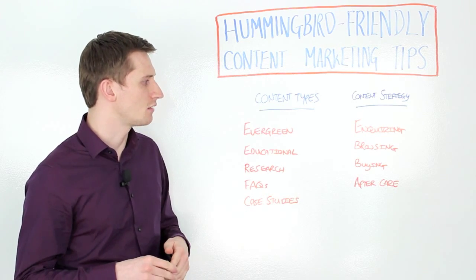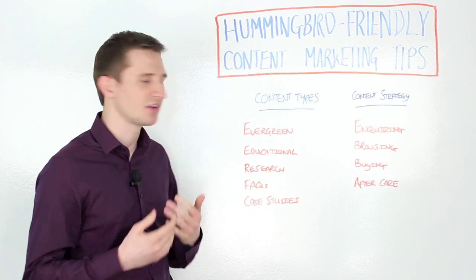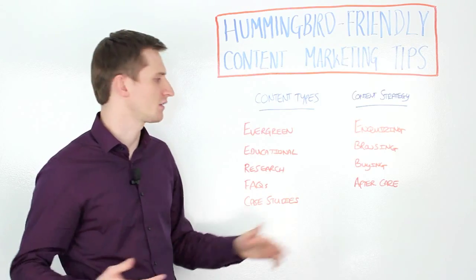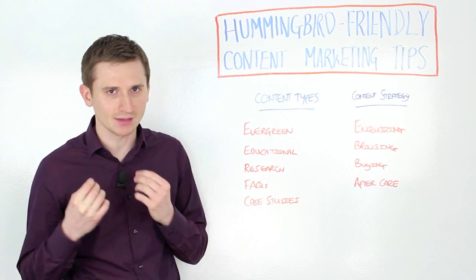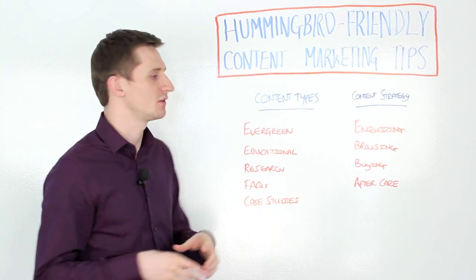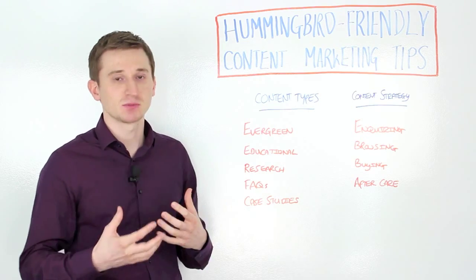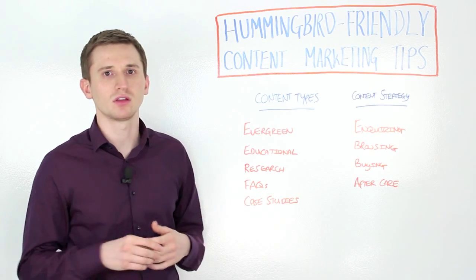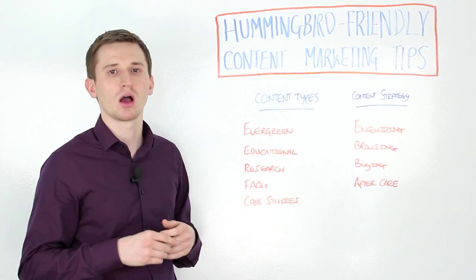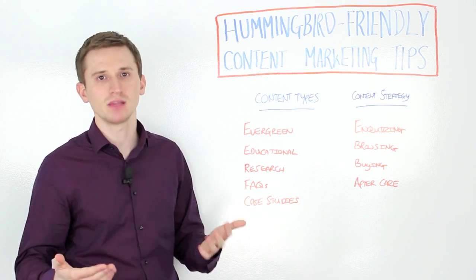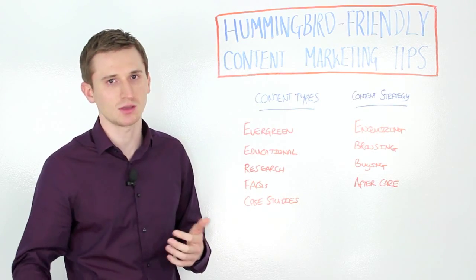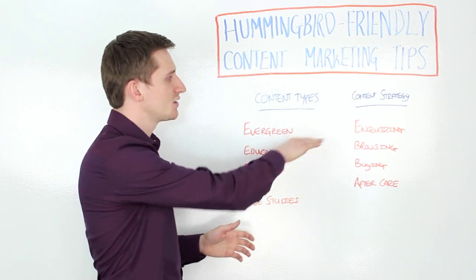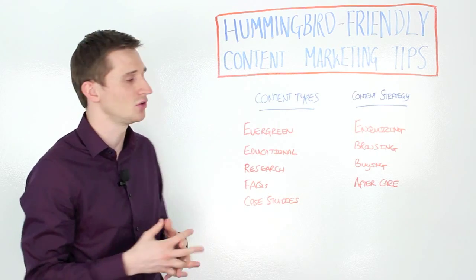Aftercare is commonly thought of as something company-specific — what your company offers. But instead, we want to be industry-specific. So at this phase, rather than talking about what your company can offer, create content around what people can do in general once they've bought a car: general maintenance, what they can do to help their car pass its MOT, how to change a tyre, and so on. At each phase there are distinct differences in the types of content you create.